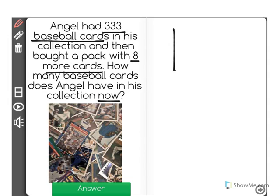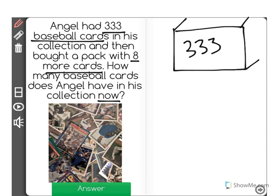Let's visualize this. He started with 333 cards. Maybe they're all in this box here. That's where he keeps them. And then he bought a pack that had 8 more. So those 8 more now are part of his collection. So what we have to do is count on.